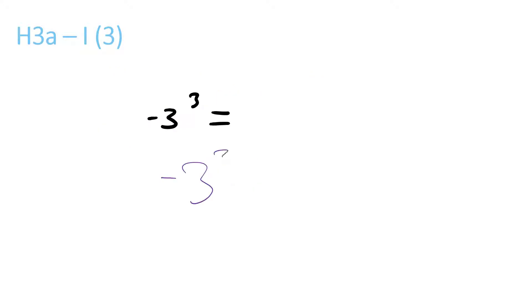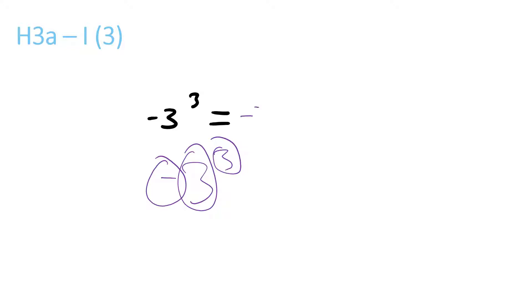Minus 3 with the 3 up there — so there's 1 minus, and then 3 with a little 3. So 3 times 3 times 3 is 27, but you remember the minus, so minus 27.